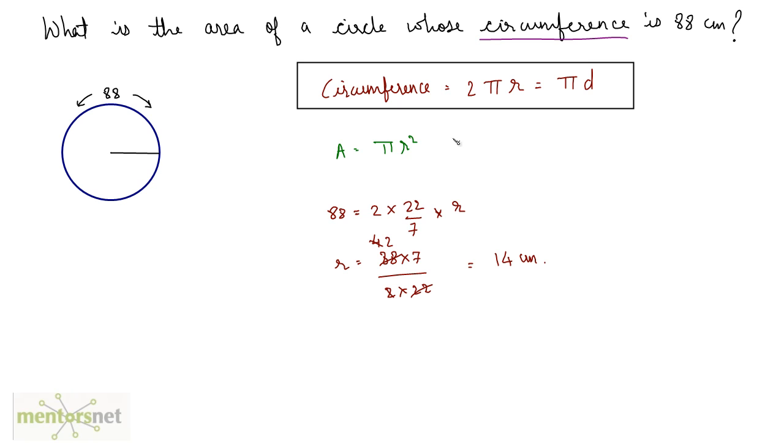Now we can calculate the area. We have pi is 22 by 7 times r square that's 14 times 14. 7 times 2 is 14. So you have 44 times 14 as the area and that is 616 cm square.